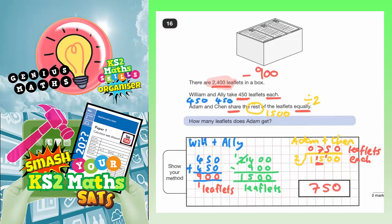To summarize what we did: we worked out what William and Ali, how many leaflets they had. That was 450 and 450, which was 900. Then we subtracted that from 2,400, which left us with 1,500 leaflets for Adam and Chen. And we shared those equally between 2 people, which made 750 leaflets each for both Adam and Chen.